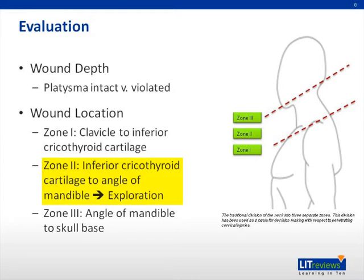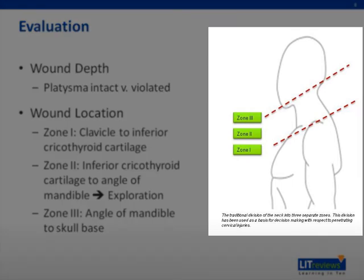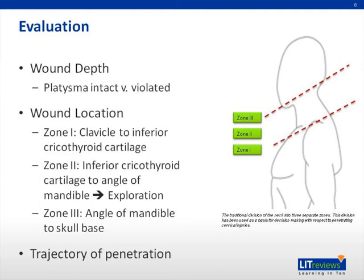As you can see in the picture here, the zones are defined by various anatomic landmarks: zone 1 being from the clavicle to the inferior cricothyroid cartilage, zone 2 being from the inferior cricothyroid cartilage to the angle of the mandible, and zone 3 from the angle of the mandible to the skull base. Additionally, when evaluating the wound, one must consider the trajectory of the penetration — whether it was going cephalad or caudad, lateral or medial.